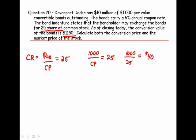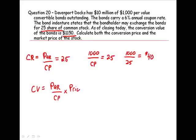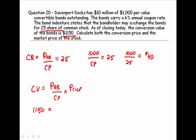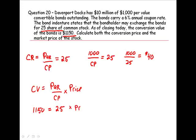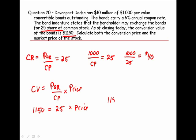We also know that the conversion value formula equals par value divided by the conversion price, times the price of the stock. Recalling that par value over conversion price gives us the conversion ratio, the conversion value of $1,150 is equal to 25 shares times the current market price. All we have to do is take $1,150 divided by our conversion ratio of 25, and we get a market price of $46 per share.